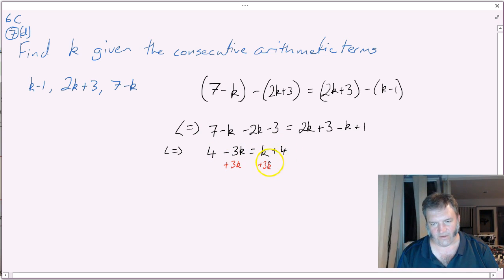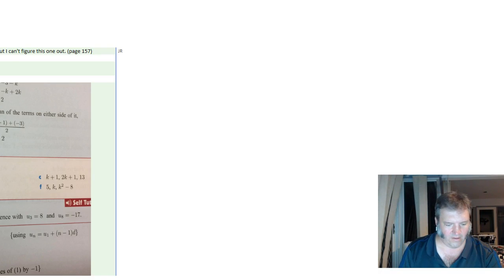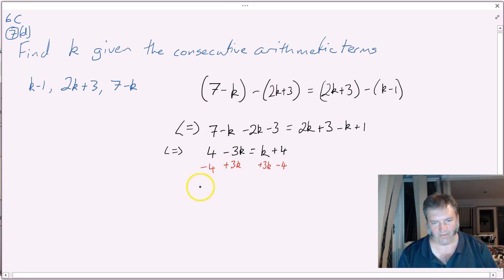And then here I've got plus 4. If I'm getting my k's on the right, I want to get rid of that 4. So I'm going to subtract 4 from each side. It's going to go off my screen again, but we get it back pretty quickly.